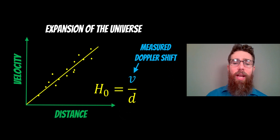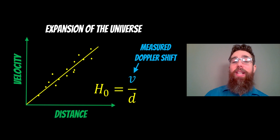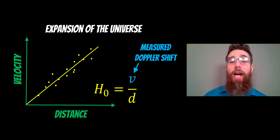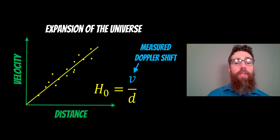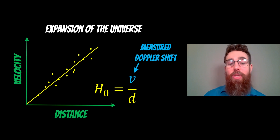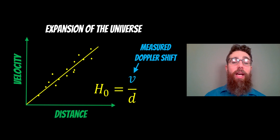For very distant galaxies, we can use the expansion of the universe. If we have the Hubble constant — the expansion rate of the universe — we can measure the redshift of the galaxy, which is essentially the Doppler shift. If it's moving away from us, it's redshifted and we can work out its velocity. Since velocity increases with distance, we can use that relationship to work out the distance to the galaxy.